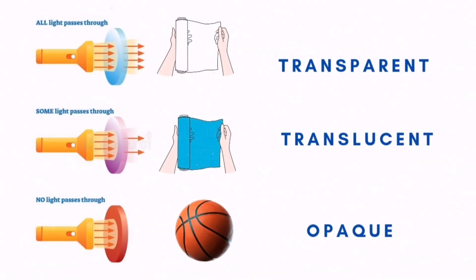In this experiment, we noticed that using the plastic cover, which is transparent, all light was able to pass through. While using a translucent material like colored cellophane, only some light was able to pass through. And lastly, using the ball as the opaque object, no light was able to pass through it.